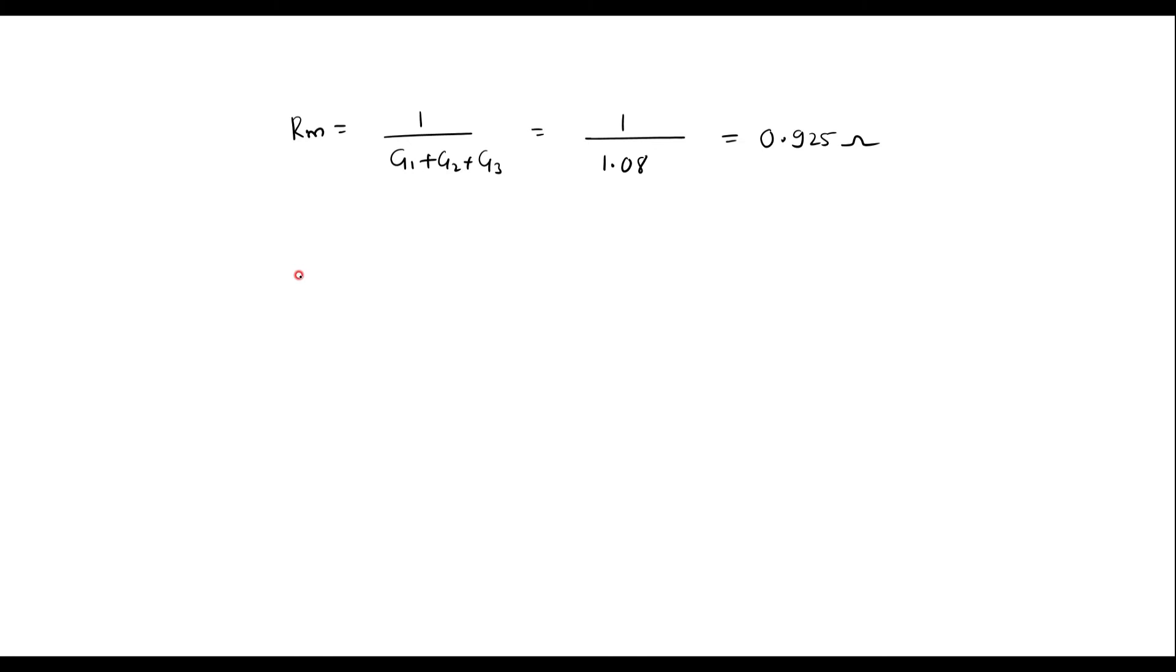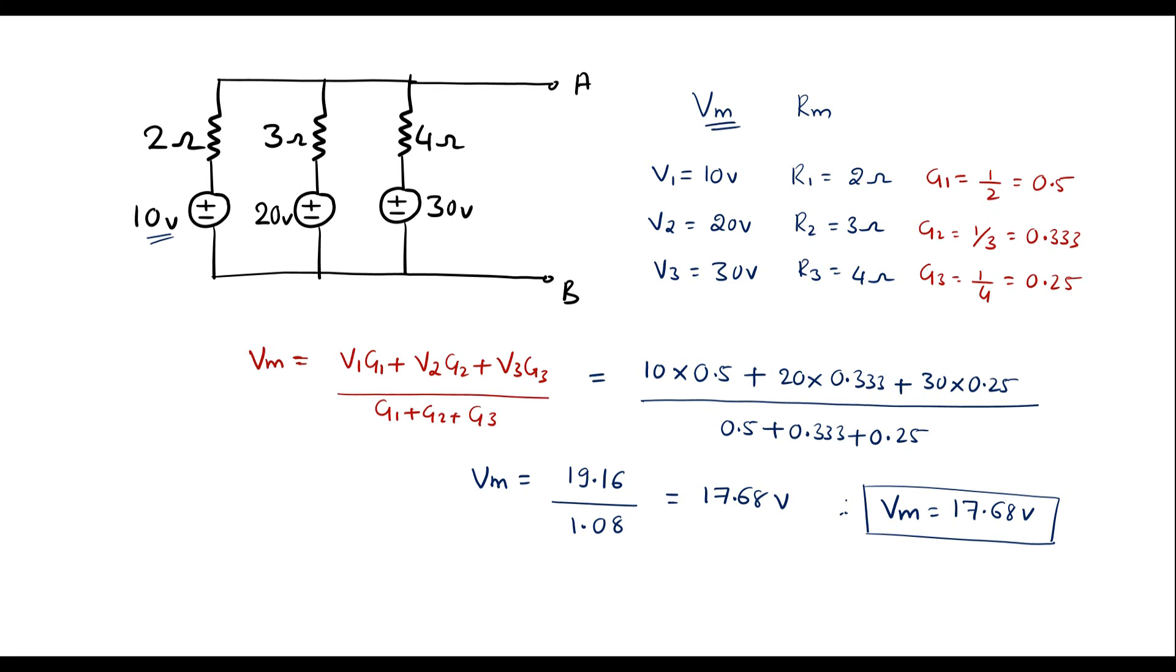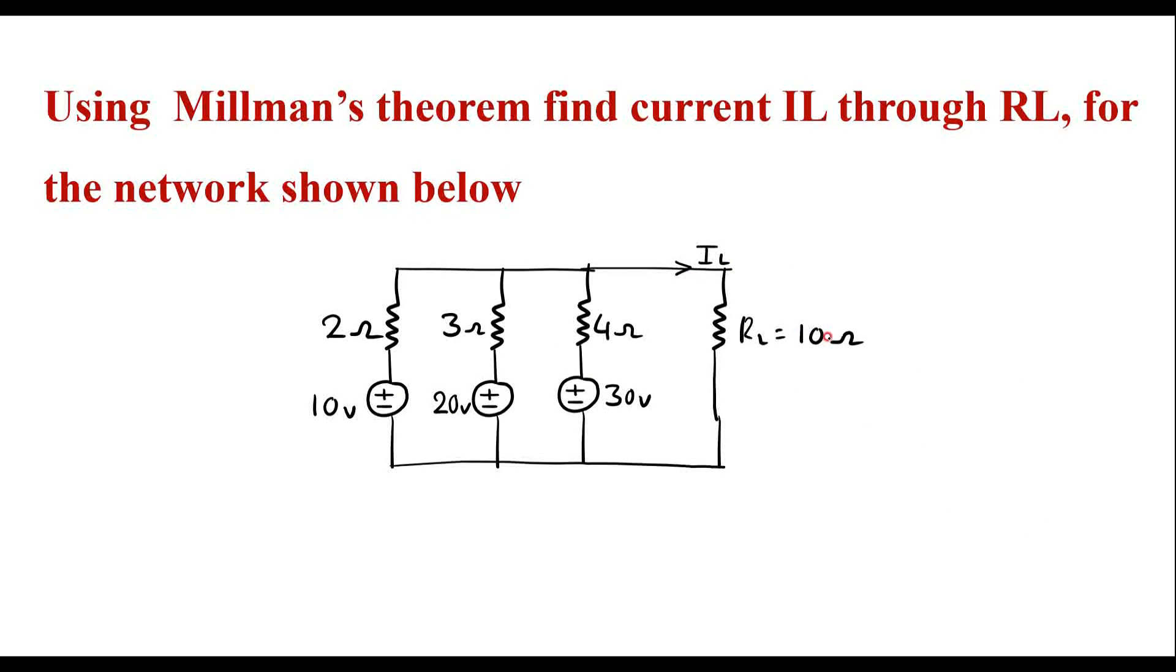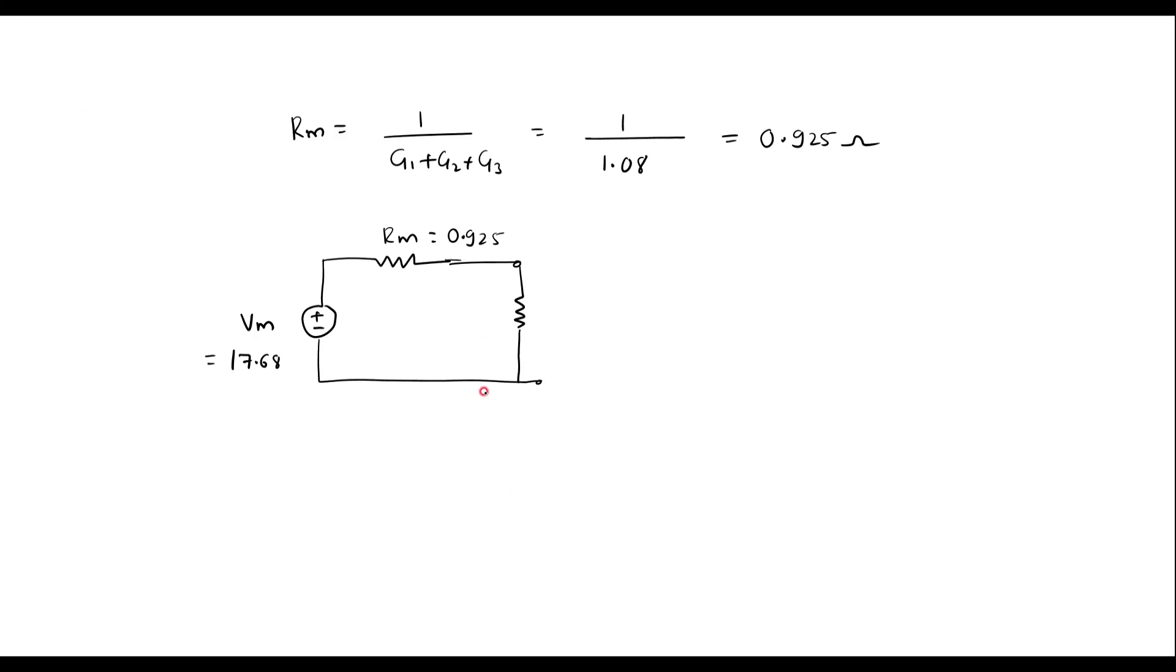Now we have to connect Vm and Rm in series, so Vm should be connected in series with Rm. Vm value is 17.68, and Rm is 0.925. The 10 ohm resistor should be connected in series with this circuit.